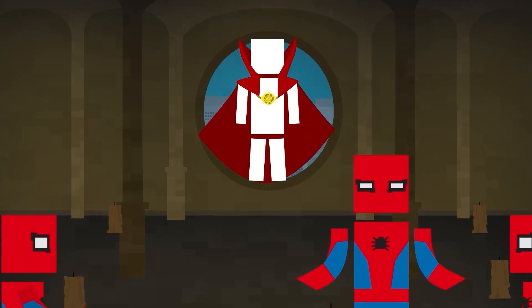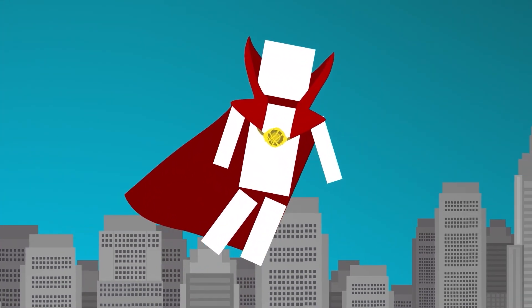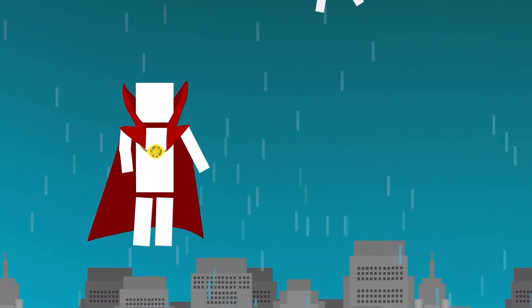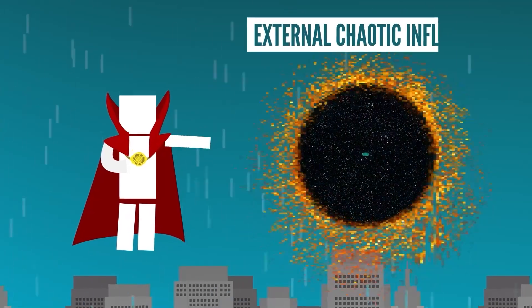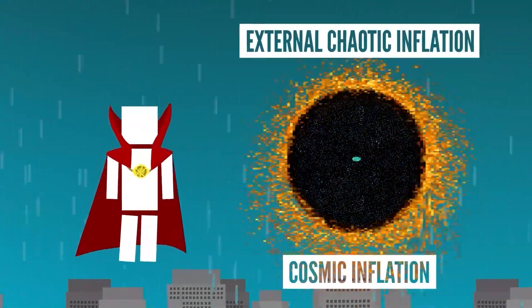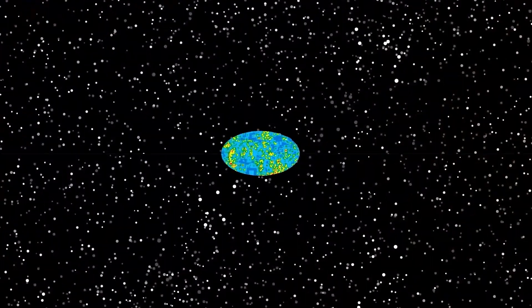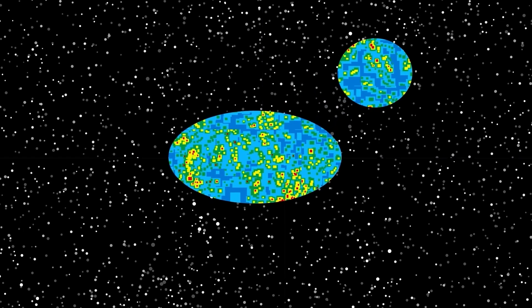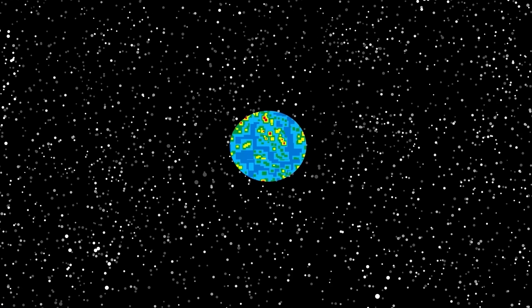In level 2, there are an infinite number of level 1 multiverses that exist in the same space-time, but may have different physical laws. According to the external chaotic inflation and cosmic inflation theories, parts of our universe are continuously expanding. These pockets then sort of pinch off from our universe, becoming their own universes.